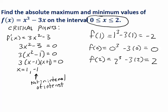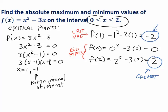So we plugged in the critical value, and we plugged in the endpoints. And notice that among the outputs we obtained, the largest output was 2. This is the greatest output.